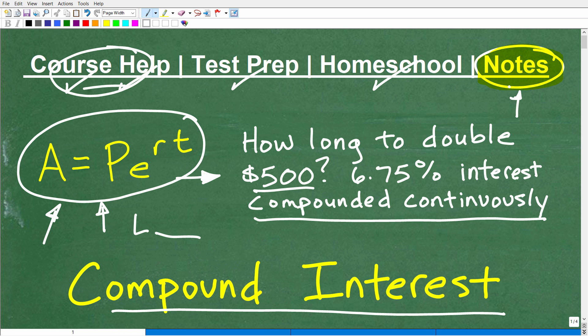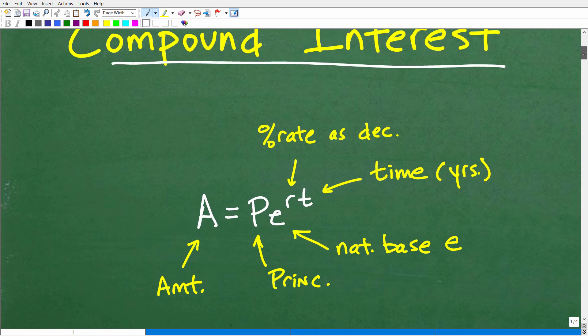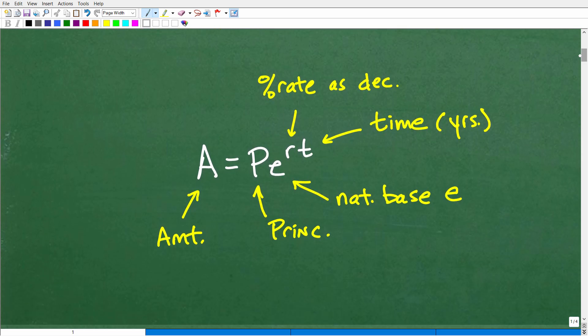All right, so here is the problem. And, again, if you want to go ahead and pause the video and work on it, it should take, you know, if you know what you're doing, it should take you about a minute and a half to do at most. But let's get into it. And first, let's explain the formula for continuous compound interest. So we have these variables A, P, E, R, and T. Let's go ahead and just make sure we understand what these variables stand for.